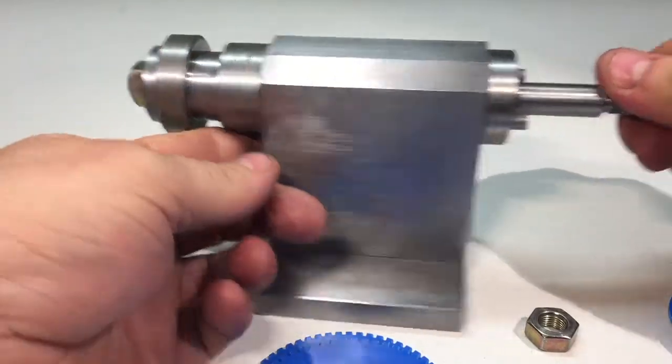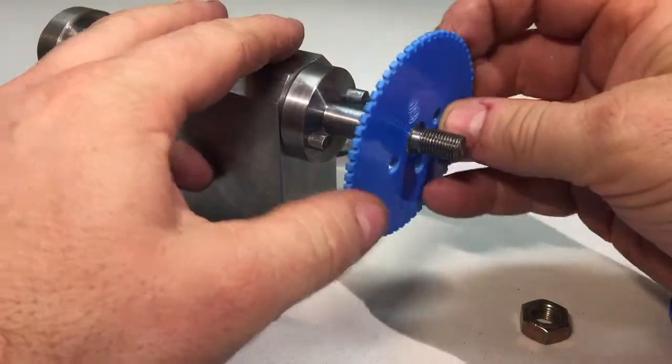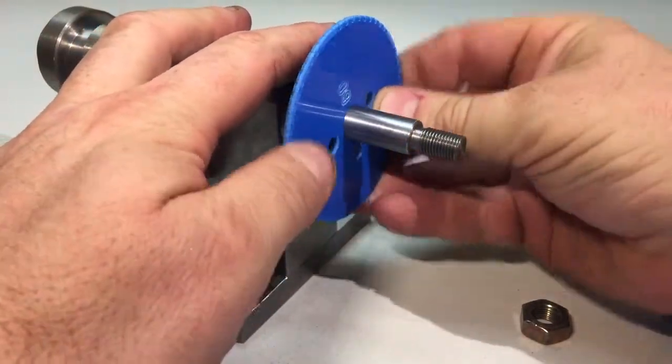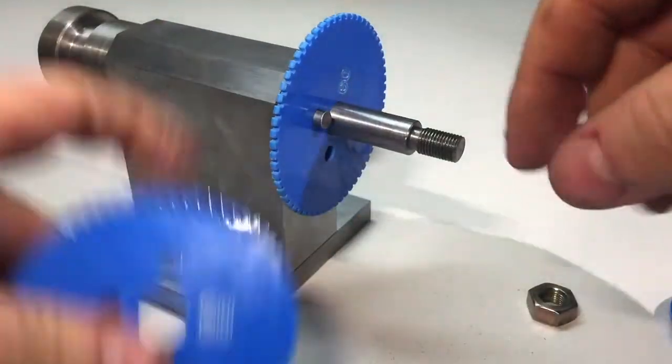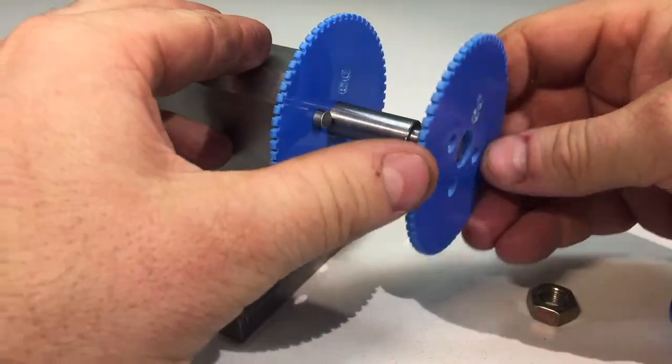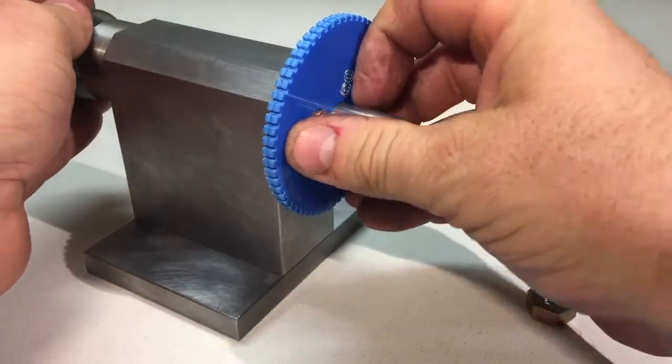Now we need to figure out the indexing. 60 teeth - that's a bit tedious. That makes it very simple in my case because we can just take a dividing plate with 60 teeth in it because it's harder to mess up that way. We get our dividing plate on.